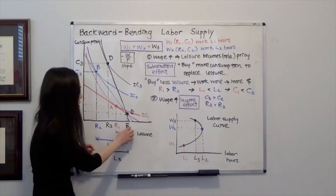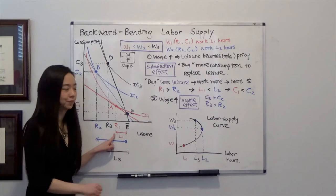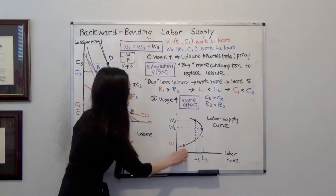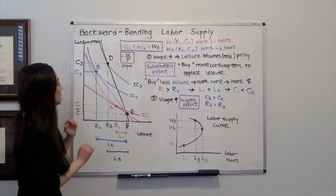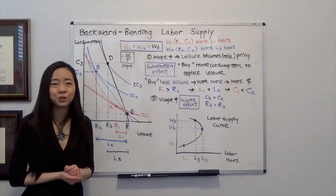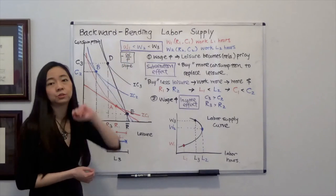L1 is equal to R bar minus R1. So that's that many hours of labor hours. And suppose, at this time, our wage is going to increase from W1 to W2. So that is going to change the slope of our budget line from the red line to the blue line.